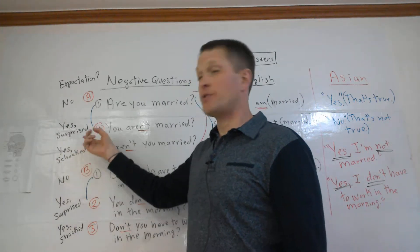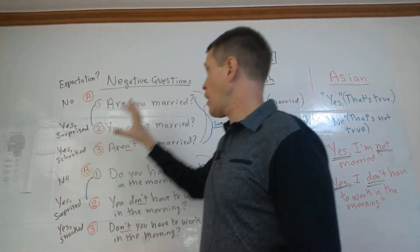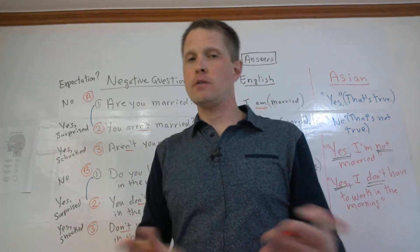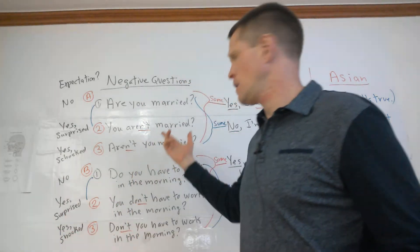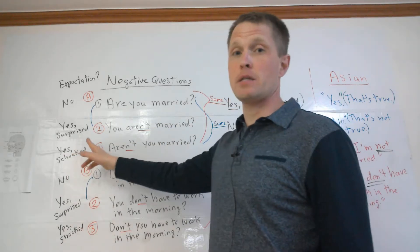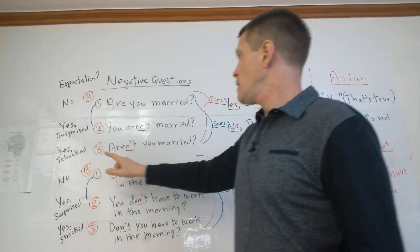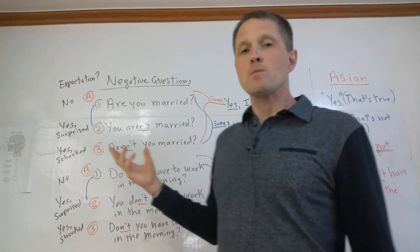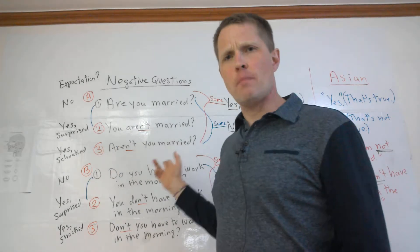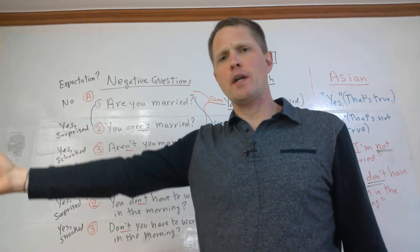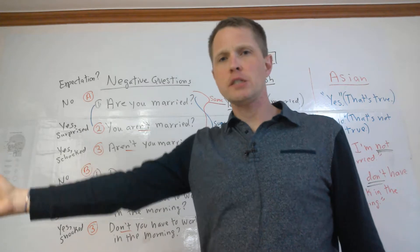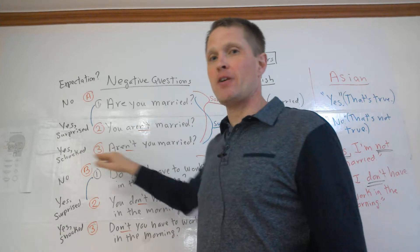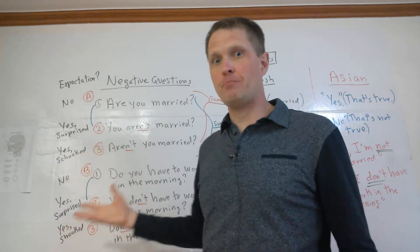Whereas if I say 'You aren't married,' I have an expectation — I think that you are, so I'm surprised that you're not. Often the first and second forms go together: first I ask 'Are you married?' and you say no, and I'm surprised, so I say 'You aren't married — I thought you were.' Number three, 'Aren't you married?', is completely different — it's often used alone, as in 'Aren't you married? What are you doing with that other person? What would your husband or wife think?' My expectation is yes, you are married, and I'm not just surprised — I'm shocked because of what you're doing.